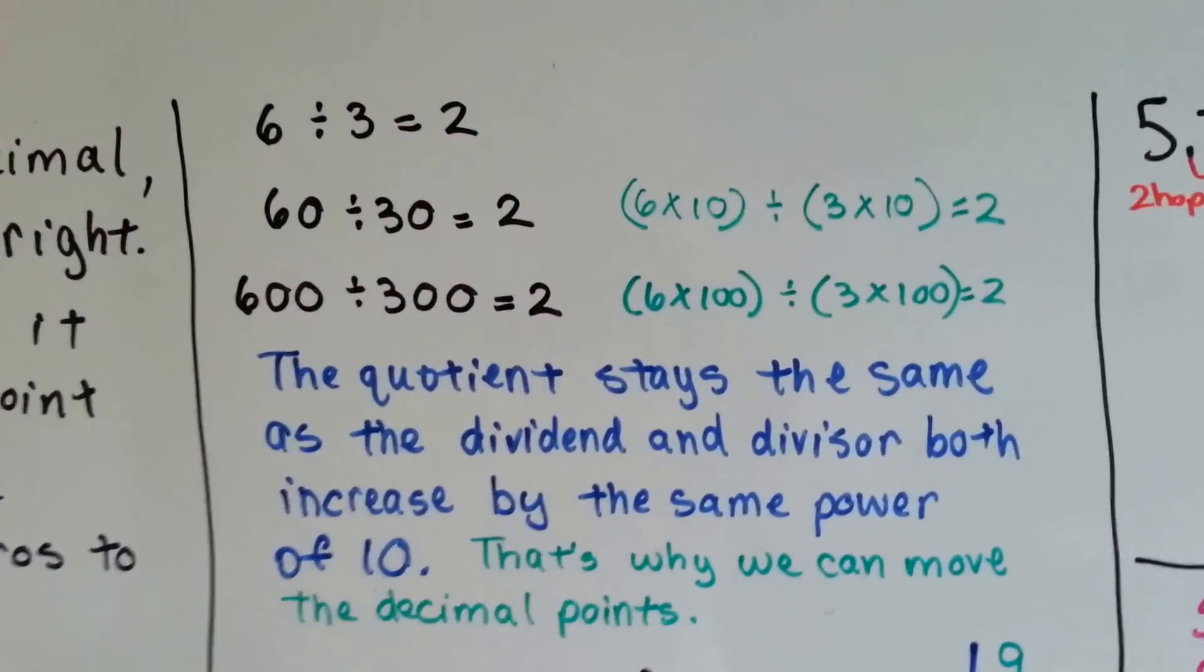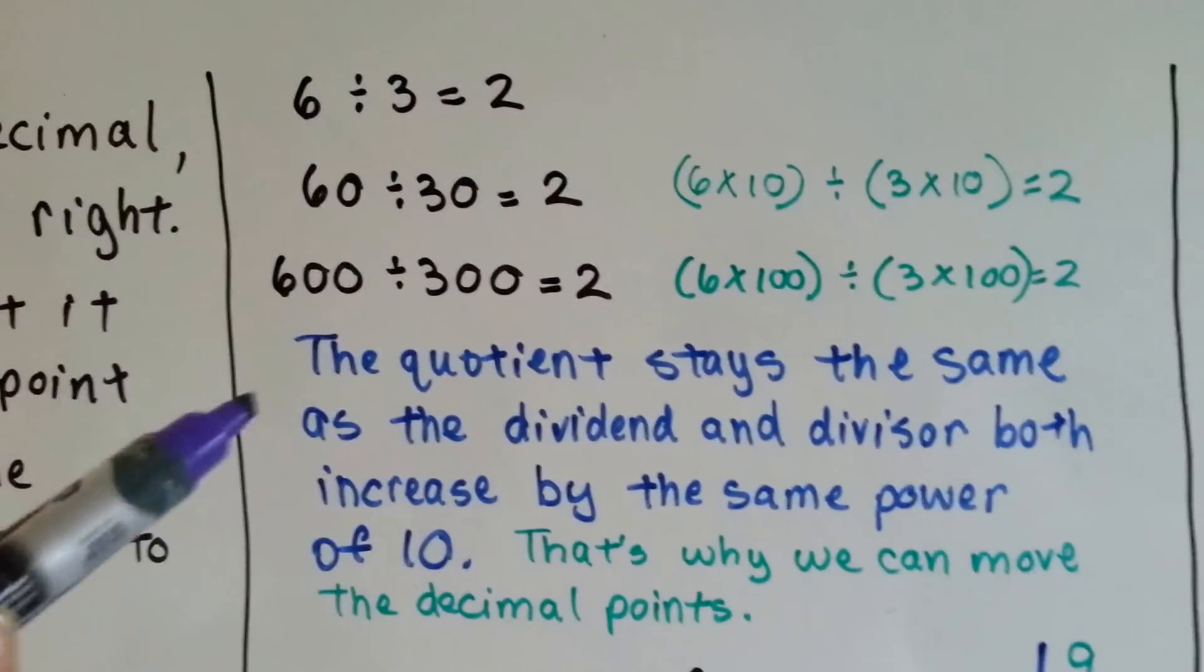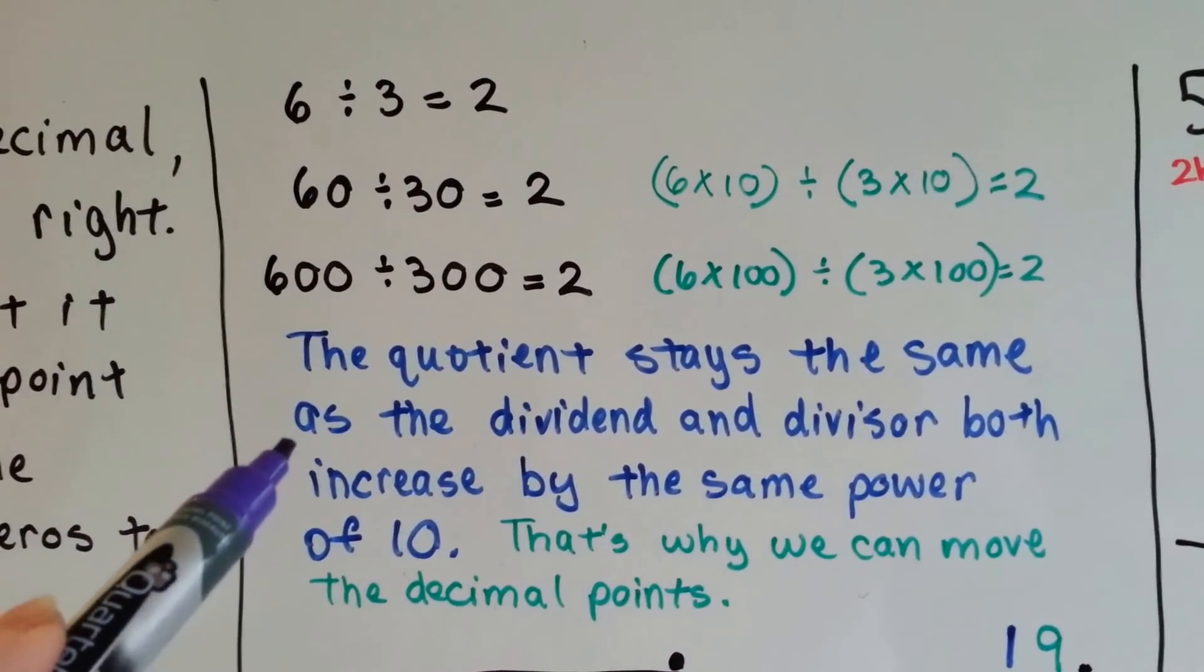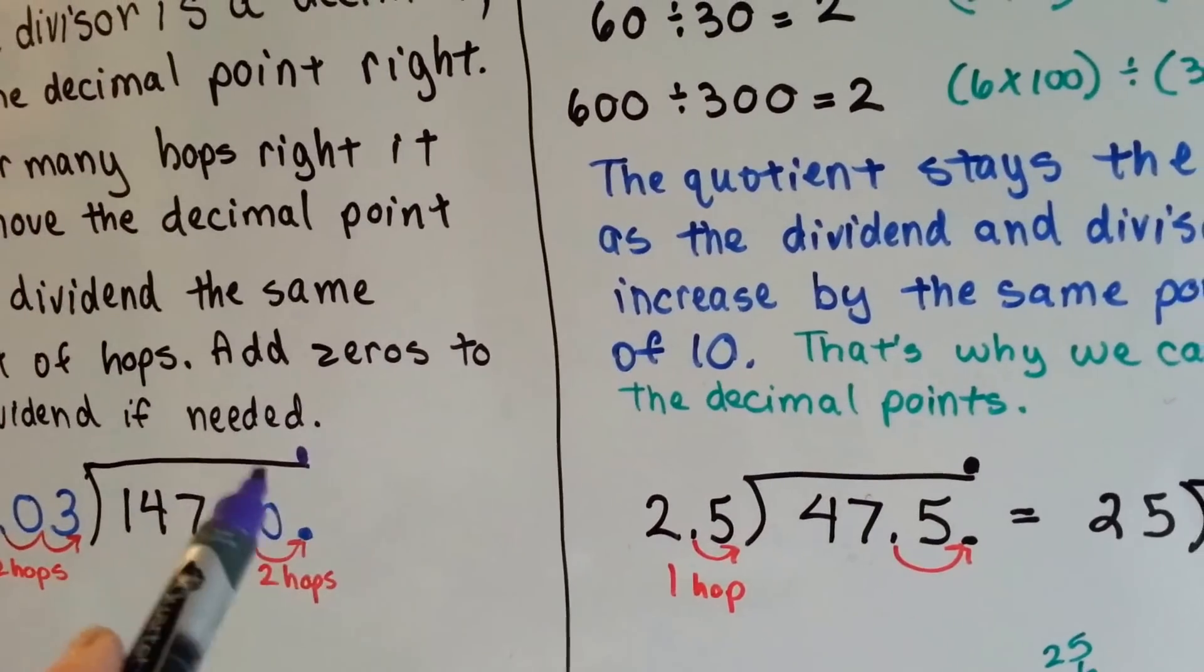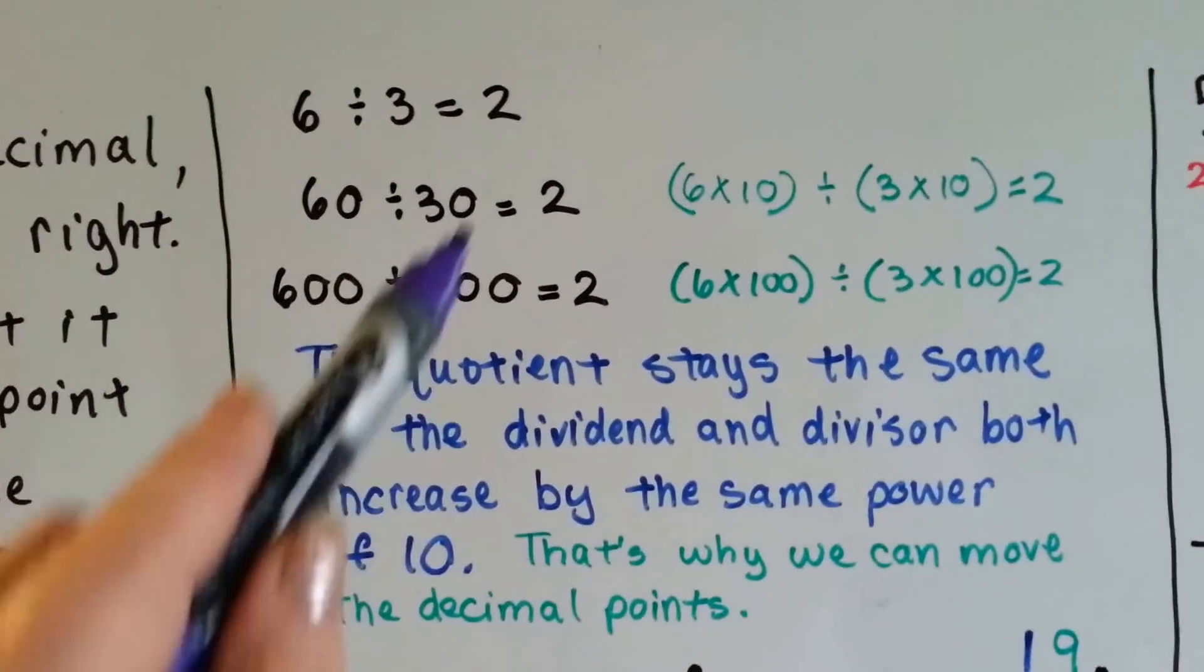Why does this work? Well, the quotient stays the same as the dividend and divisor both increase by the same power of 10. So by moving it over, we're not going to change the quotient. It'll stay the same.